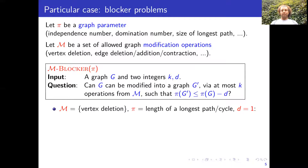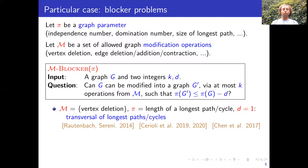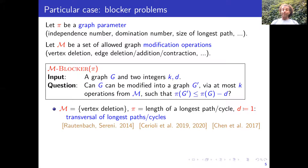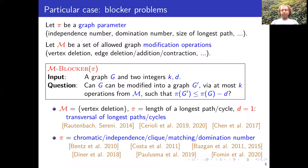What we want is that the parameter pi has dropped by at least D by these operations — namely, we want to obtain a graph G prime whose value of the parameter is at most the value for G minus D. For instance, consider the case where M contains just the vertex deletion operation and pi is the length of a longest path or cycle with D equal one. This is exactly what is known as the transversal of longest paths or cycles, and it has been widely studied in the literature.